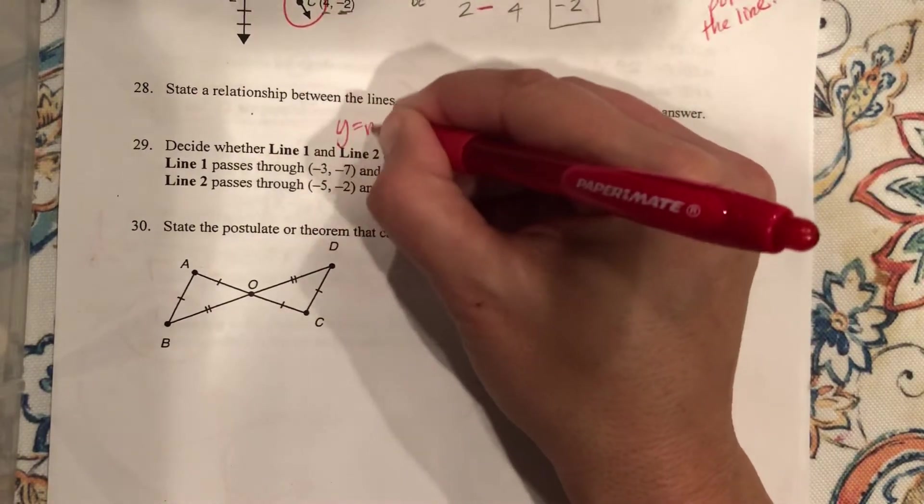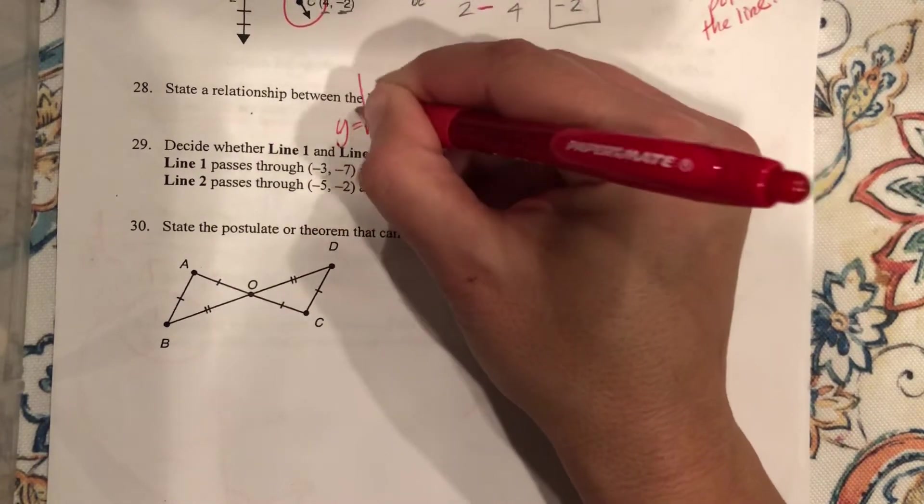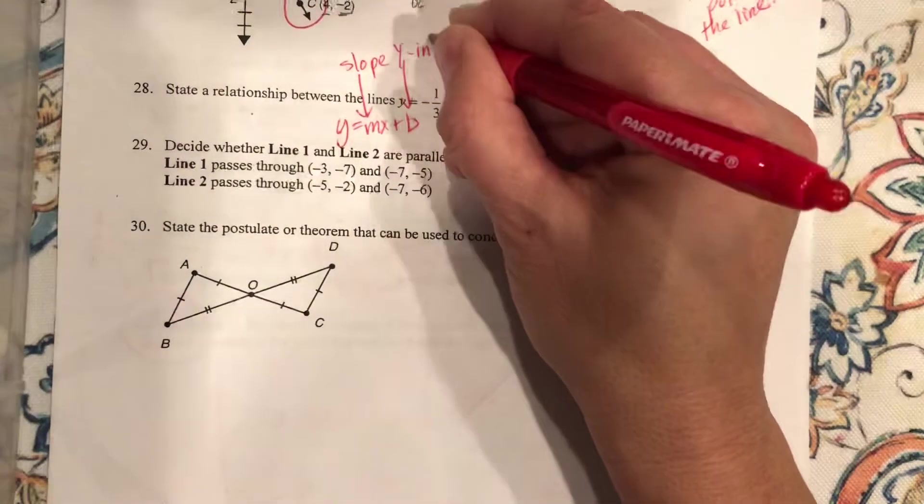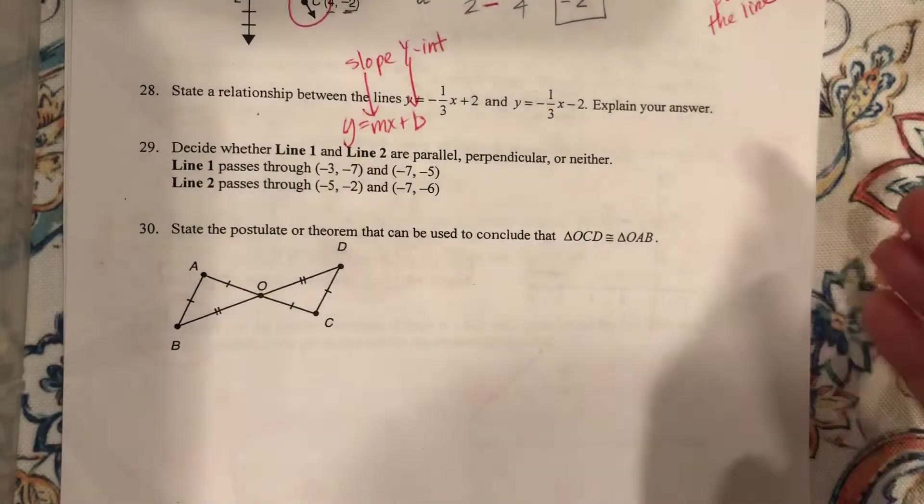Remember, you've got Y equals MX plus B, where M is your slope, and this is your Y intercept. This is slope-intercept form.